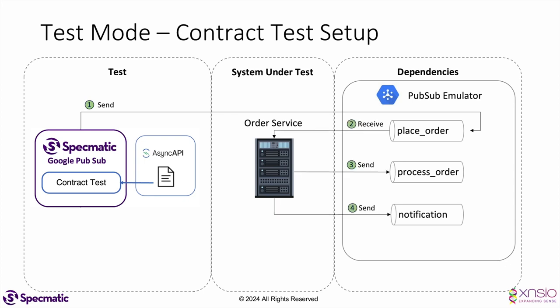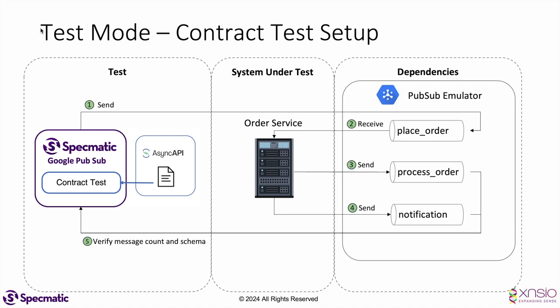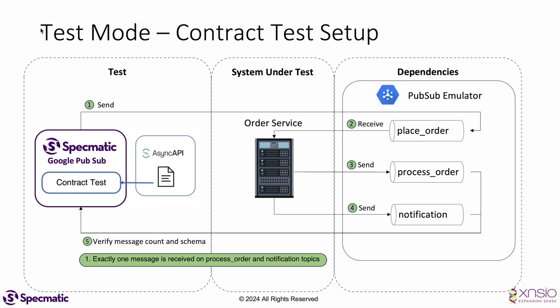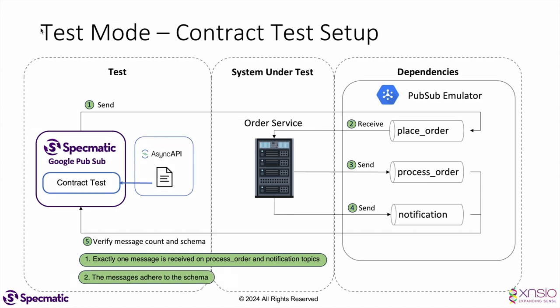Specmatic will then wait for messages on the process order and notification topics. It will validate two things: first, exactly one message is received on each of the process order and notification topics; second, the received messages adhere to the schema defined in the async API specification. If either of these two conditions are not met, Specmatic will fail the contract tests.